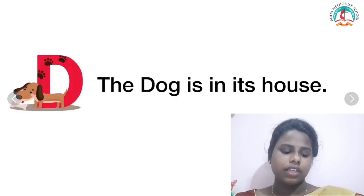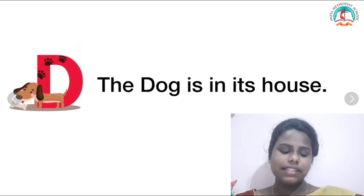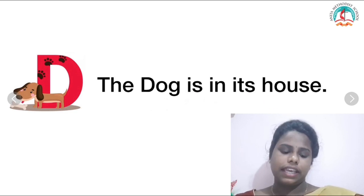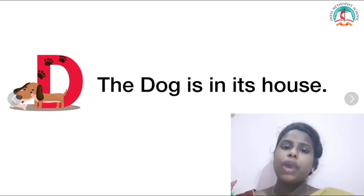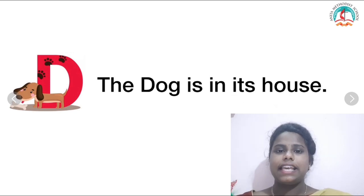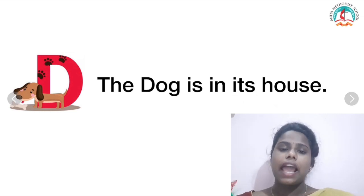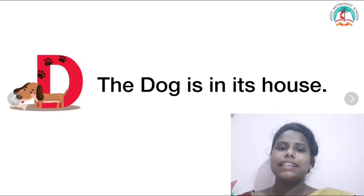The next one — D for dog. Shall we read this? The dog is in its house. Where do the dogs live? They live in the kennel. Have you seen a kennel? Like we have houses, the dog's house is called a kennel. Very good.